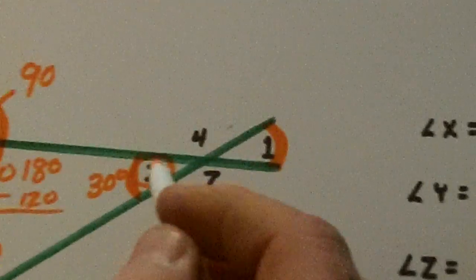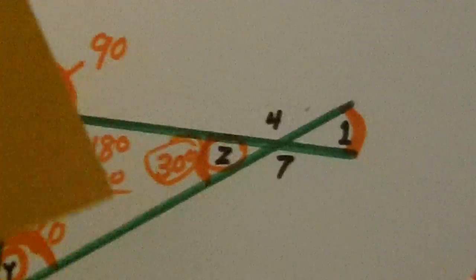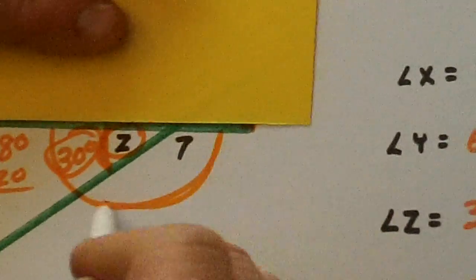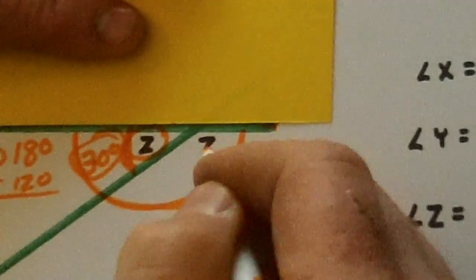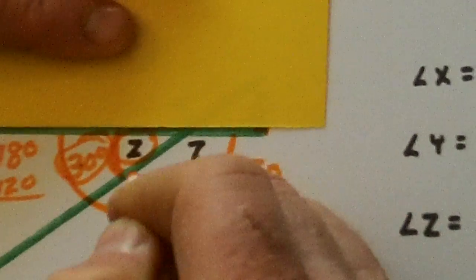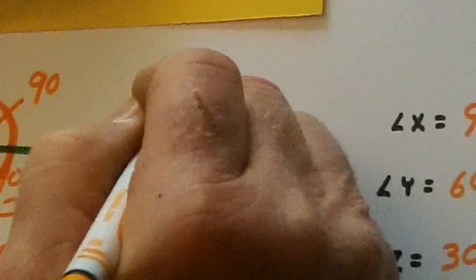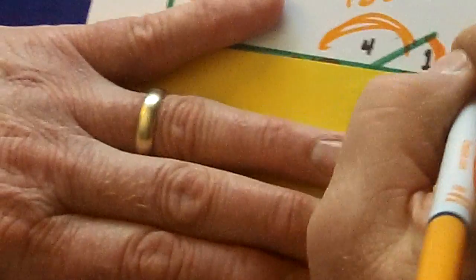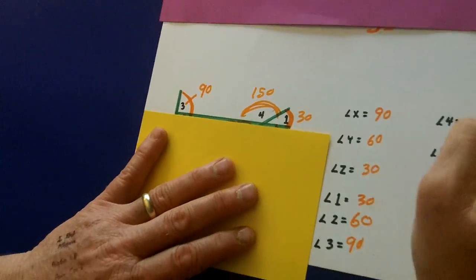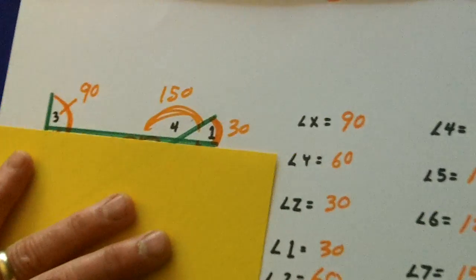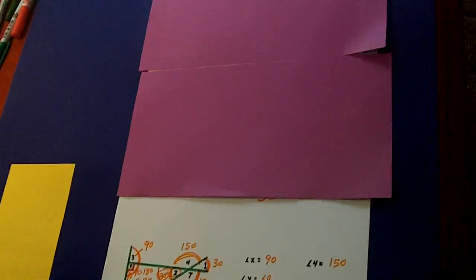And if Z is 30, watch this. Upside down. If Z is 30, seven has to be 150. Look at that big angle. 150. And four is also 150 because that's 30. So four is 150. And there we have it.